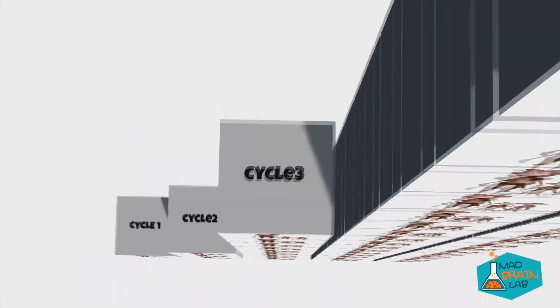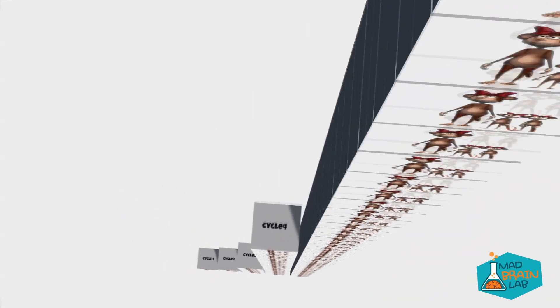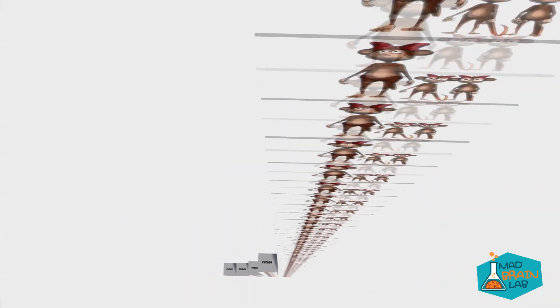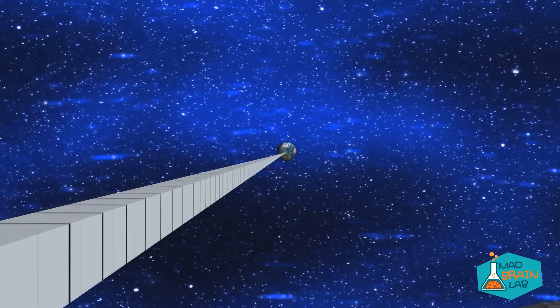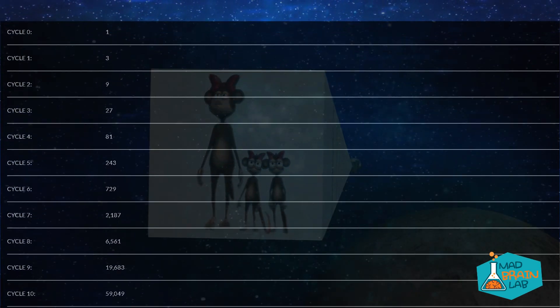We get three monkeys in the first cycle, nine monkeys in the second cycle, 27 monkeys in the third cycle, 81 monkeys in the fourth cycle. After five cycles we get 243 monkeys. After the 18th reproduction cycle we get 387 million monkeys. We can stack the monkey blocks all the way to the moon if each block was one cubic meter in size.